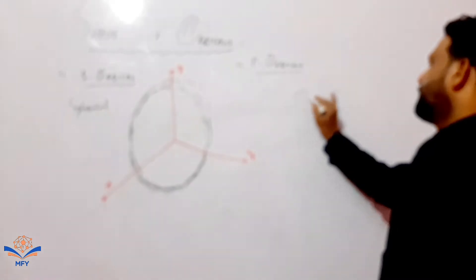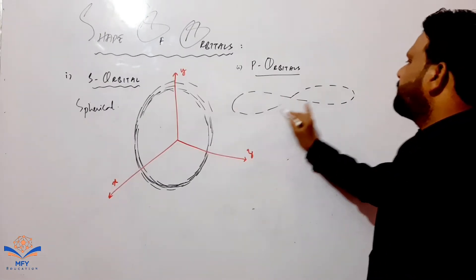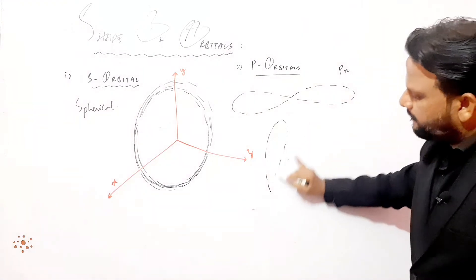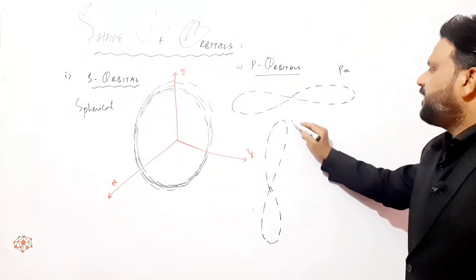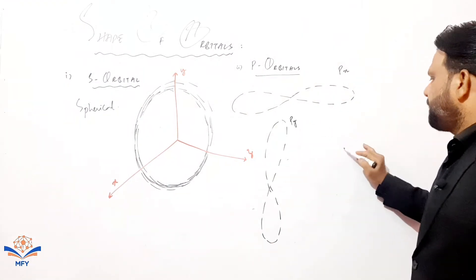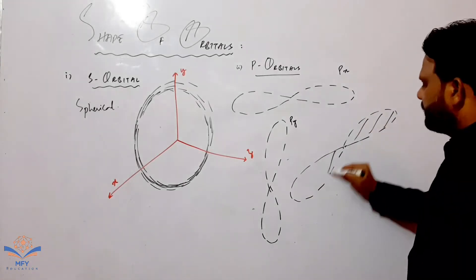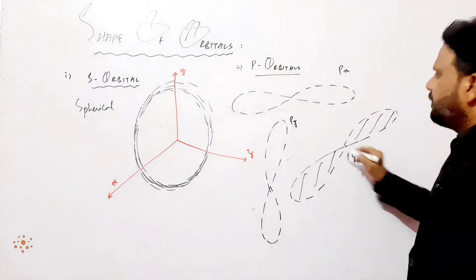P is a dumbbell-like structure in which we have three p orbitals: px, py, and pz.